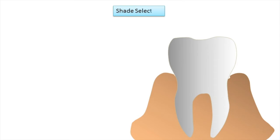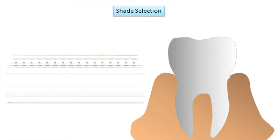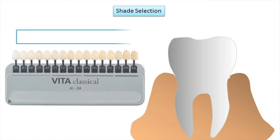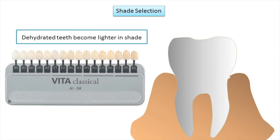The next step is shade selection. Although it is not as critical for posterior restorations compared to more visible anterior restorations, proper shade selection should be accomplished for all direct composite restorations. Use shade guides provided by different manufacturers. The shade must be selected before drying the teeth, because drying causes the teeth to lighten due to loss of translucency secondary to water loss from the naturally porous tooth structure.